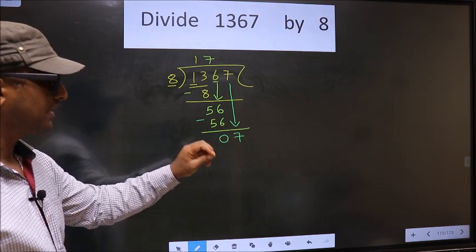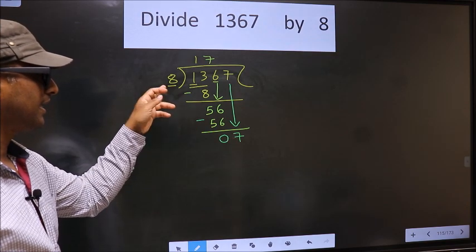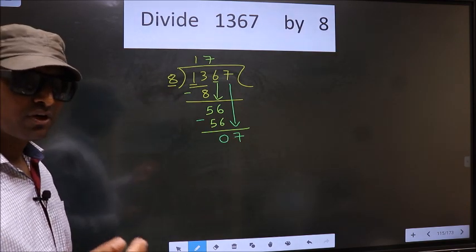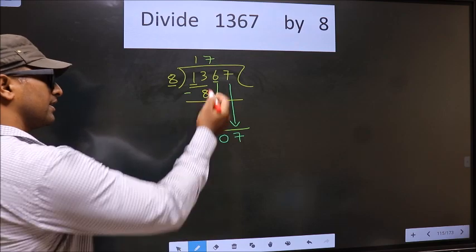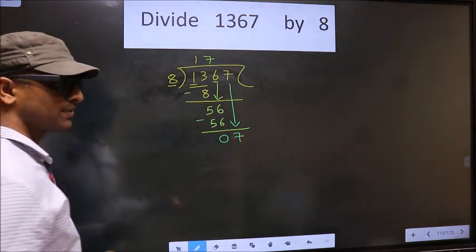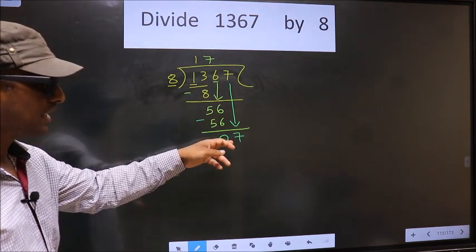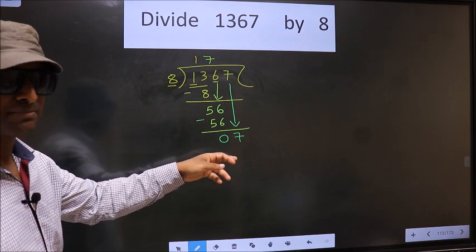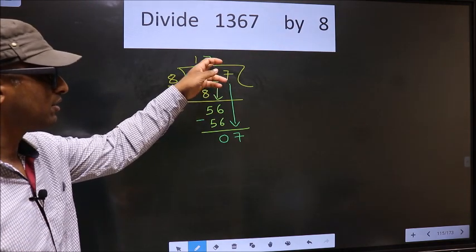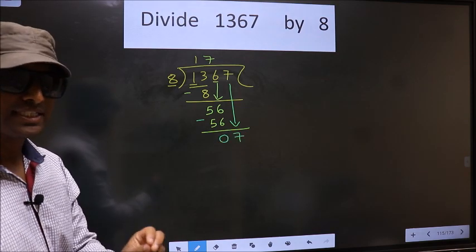Here we have 7. Here 8. 7 is smaller than 8. So what many do is they put a dot and take 0 here, which is wrong. Just now you brought the number down, and in the same step you want to put a dot and take 0 here, which is wrong.